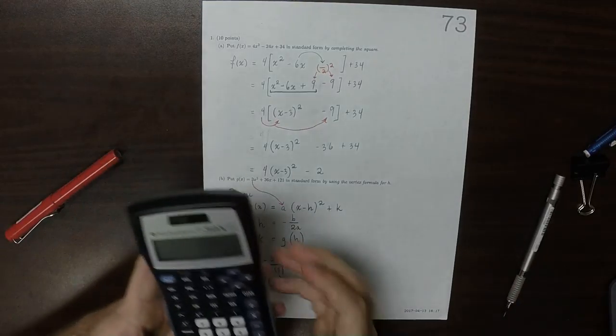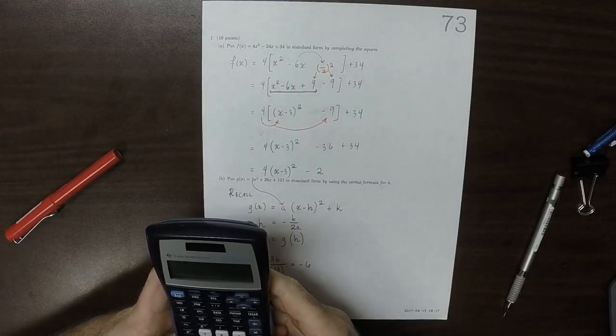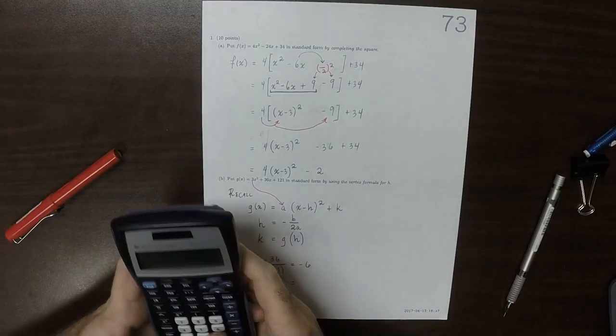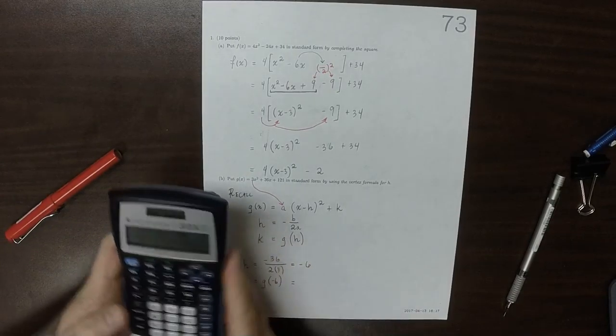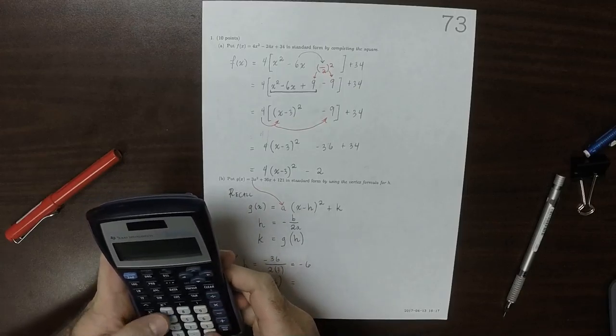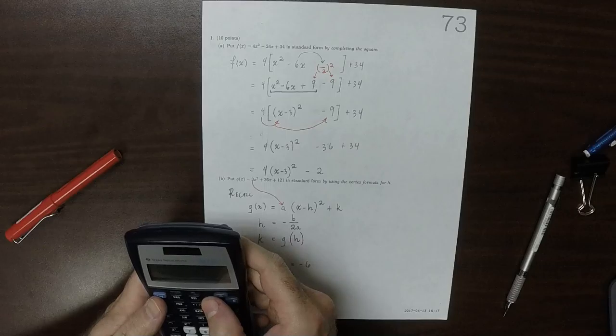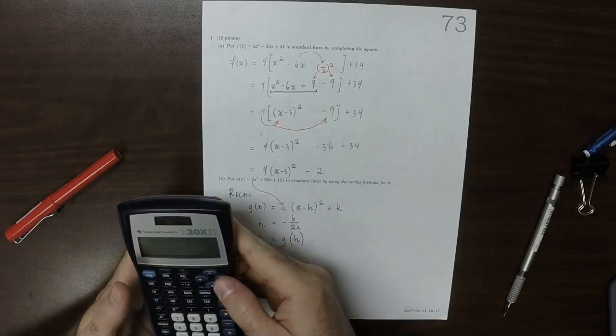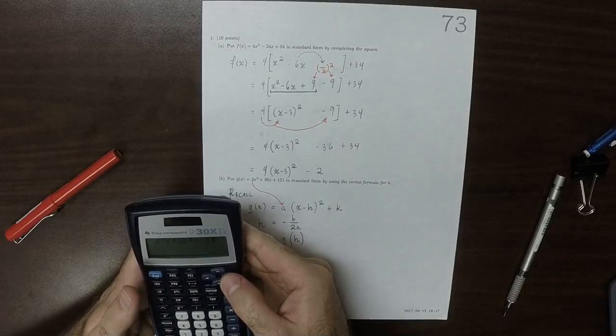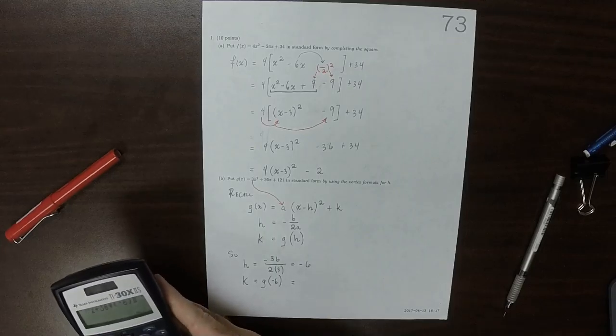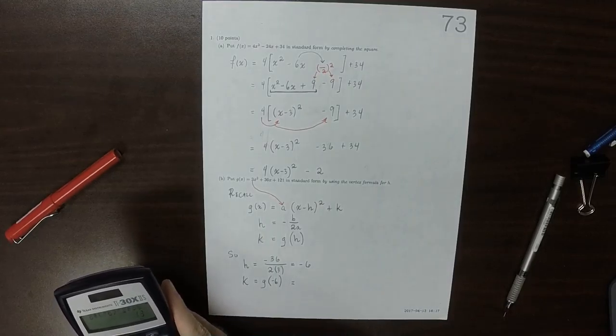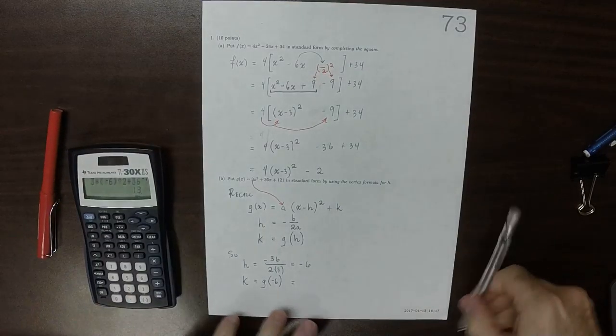Sounds like a job for the calculator. So 3 times negative 6 squared, plus 36 times negative 6, plus 36 times negative 6, plus 121. Okay, so I'm getting 13.